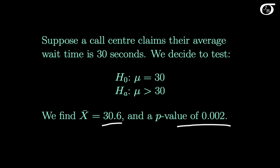A p-value of that size gives very strong evidence against the null hypothesis, and very strong evidence in this case that the population mean is actually greater than 30 seconds. But in the sample we observe this sample mean to be 30.6 seconds, a difference of only 0.6 seconds from the null hypothesis. I think in this situation most people would feel that that difference of 0.6 seconds doesn't really have any practical meaning.